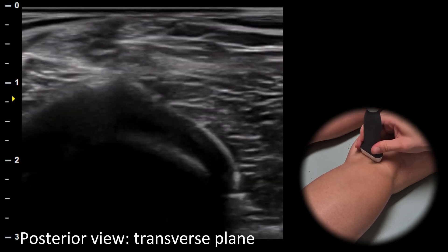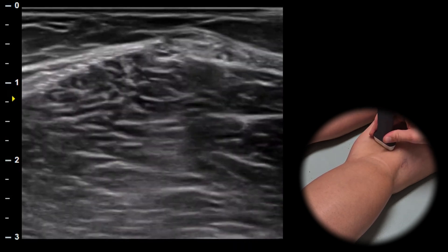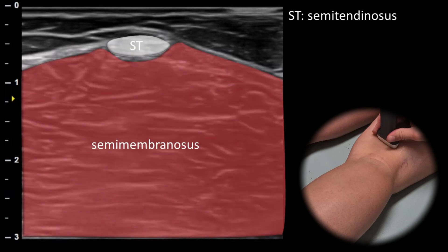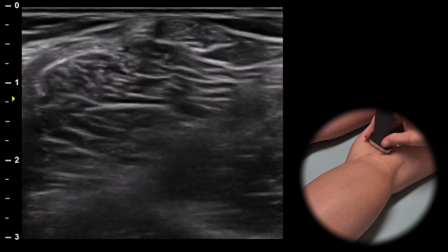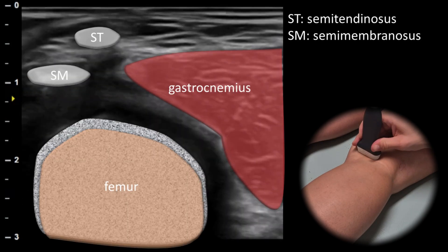The last view is the posterior view. In the transverse plane on the medial side we can evaluate the semimuscles. The tendon of the semitendinosus lies superficially to the muscle belly of the semimembranosus. A metaphorical comparison for these muscles is a cherry on a cake, where the cherry represents the semitendinosus tendon and the cake represents the semimembranosus muscle. When we follow these structures distally we reach the area between the gastrocnemius muscle and the tendons of the semimuscles, where we can scan for a Baker's cyst.